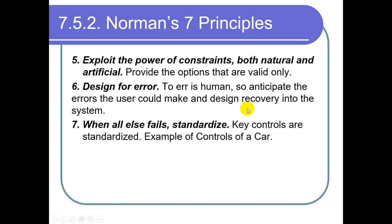Principle 5: Exploit the power of constraints, both natural and artificial. If a user tries to insert data, they can enter the wrong data. So we provide only the applicable, allowed options by constraining the control. In this manner, a user can only add values that are valid and required. Apply whatever constraints are possible so that the user can interact in a better and more productive manner.